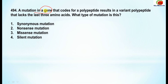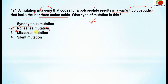Question 494: a mutation in a gene that codes for a polypeptide results in a variant polypeptide that lacks the last three amino acids. Which type of mutation is this? This is a nonsense mutation.